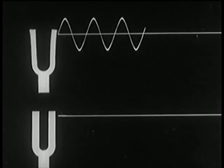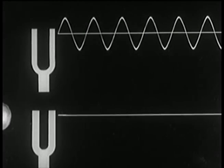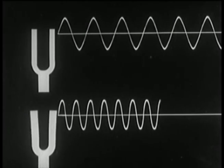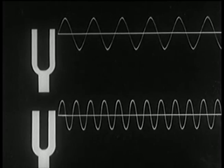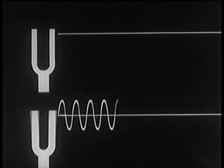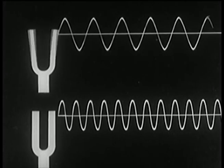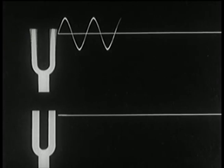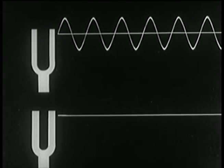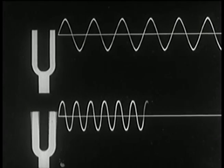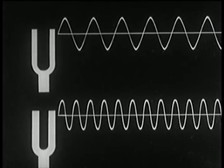To explain such differences, we picture two different sound waves. Here, the lower fork makes more complete vibrations per second. Therefore, its frequency is greater. It is evident that the one with the greater frequency has the higher pitch.